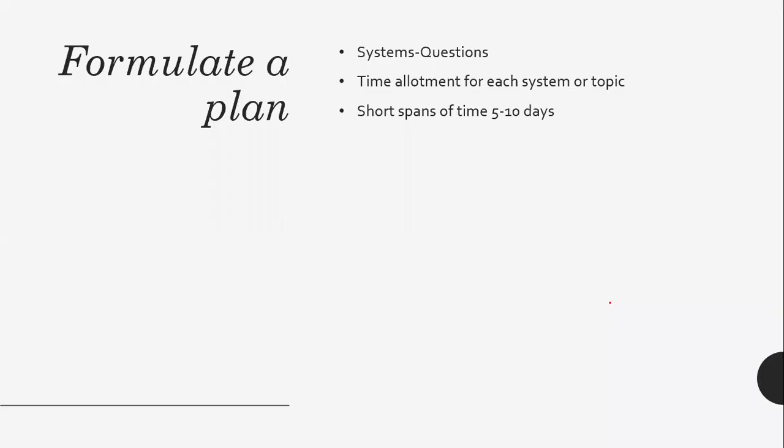Once you have a plan — knowing how many hours or days to allot per system and what content to concentrate on — plan for very short spans of time. Don't plan for the whole two or three months; that is physically not possible and you can't judge what will happen in the future. Verify that you can finish everything in two months based on time allotted per system, then micro-plan for only the next five to ten days. Small successes make you feel accomplished and more motivated.